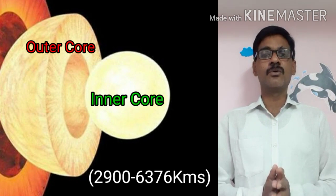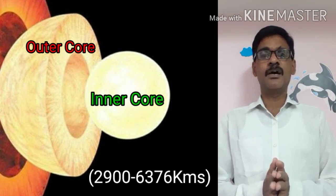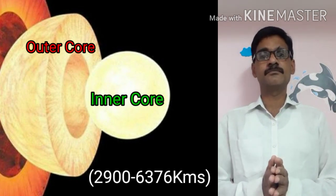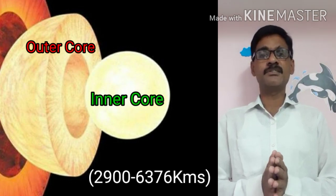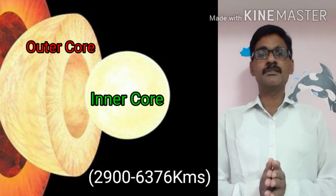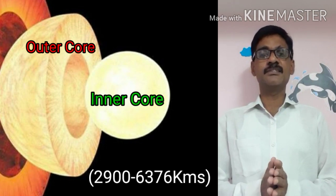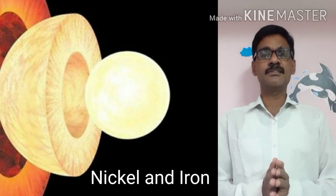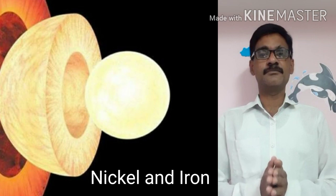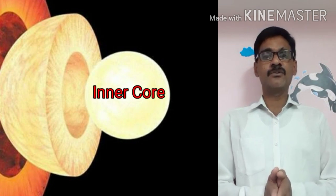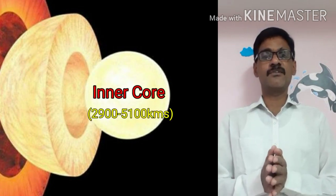The third one is the core. The earth core thickness extends from 2900 kilometers to 6376 kilometers. It contains heavy materials like nickel and iron. It is subdivided into two parts: the inner core and the outer core.